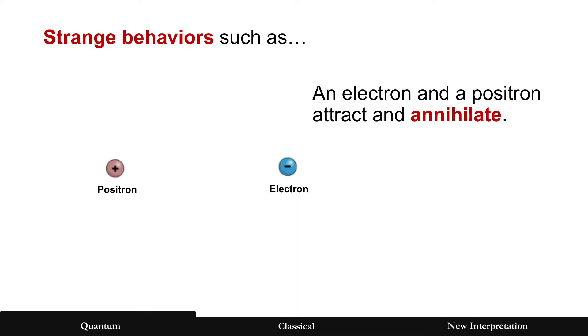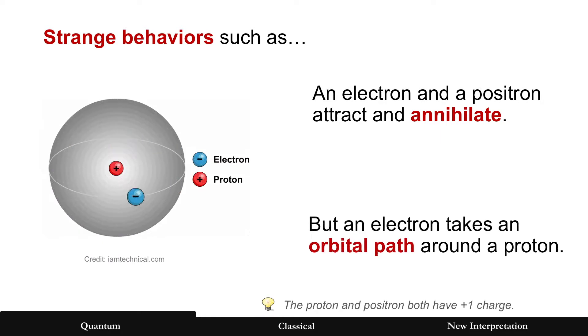What kind of strange behavior? Such as an electron and a positron that attract and annihilate like this. But yet an electron takes an orbital path around a proton. Now why is that strange? It's strange because the proton and the positron have the exact same charge, plus one.